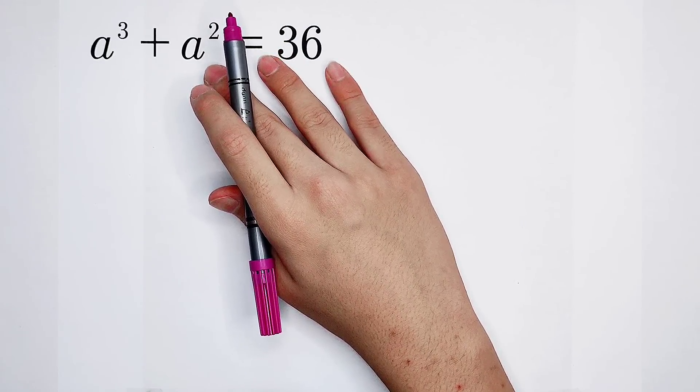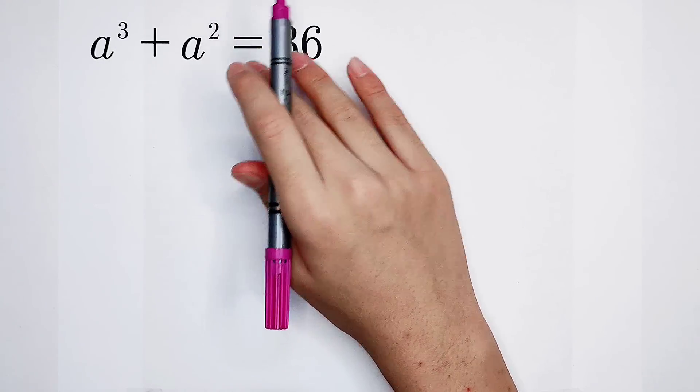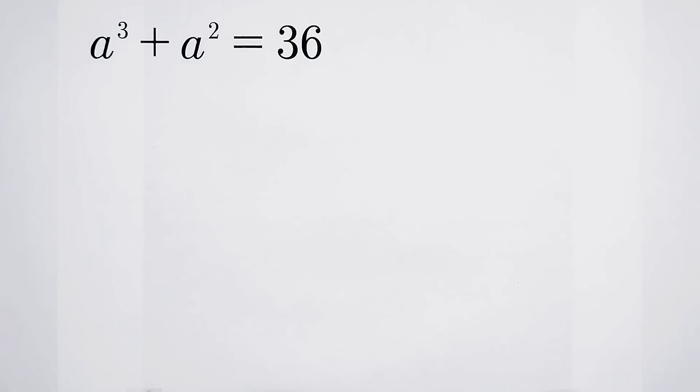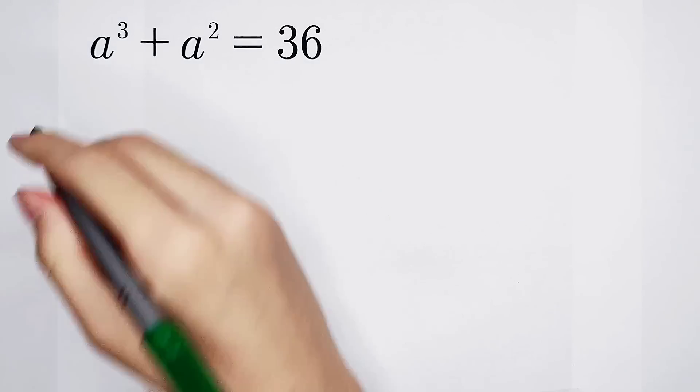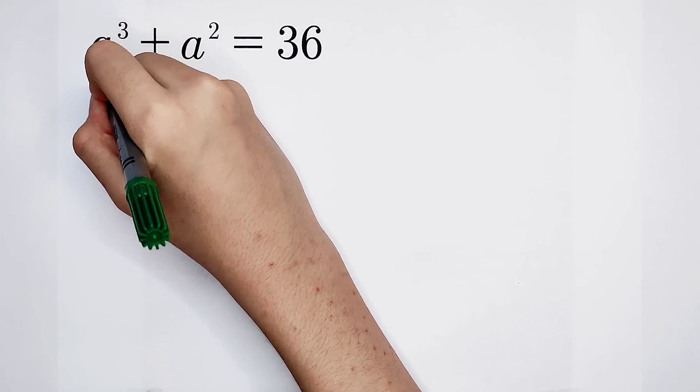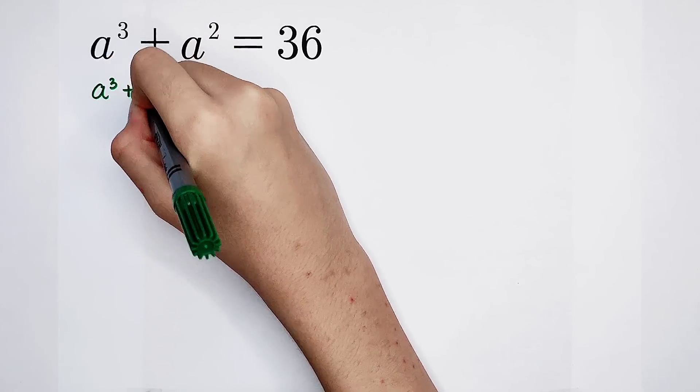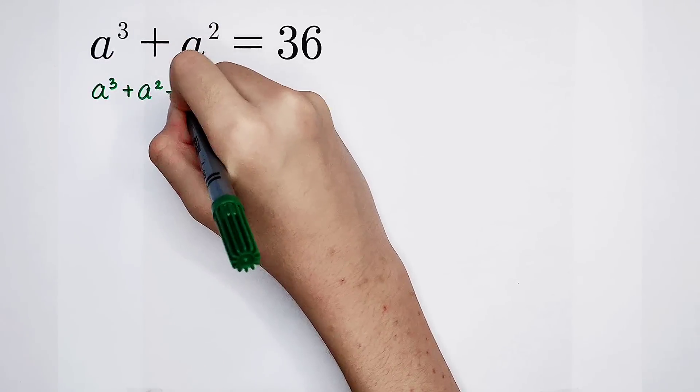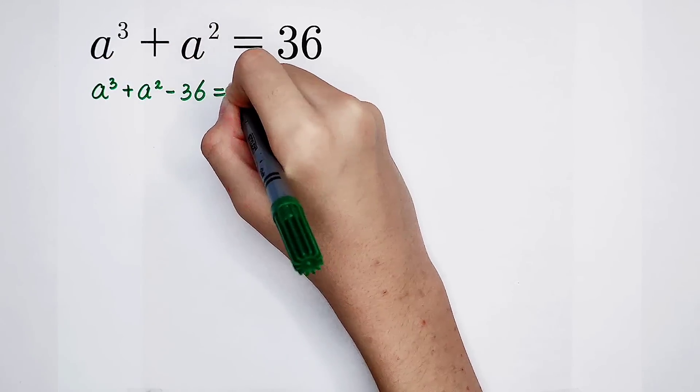For dealing with this question, the first step is we should remove this 36 from the right-hand side and move it to the left-hand side. That means I should subtract 36 on the right-hand side. Okay, now have a look at it. a cubed plus a squared minus 36 equals 0.